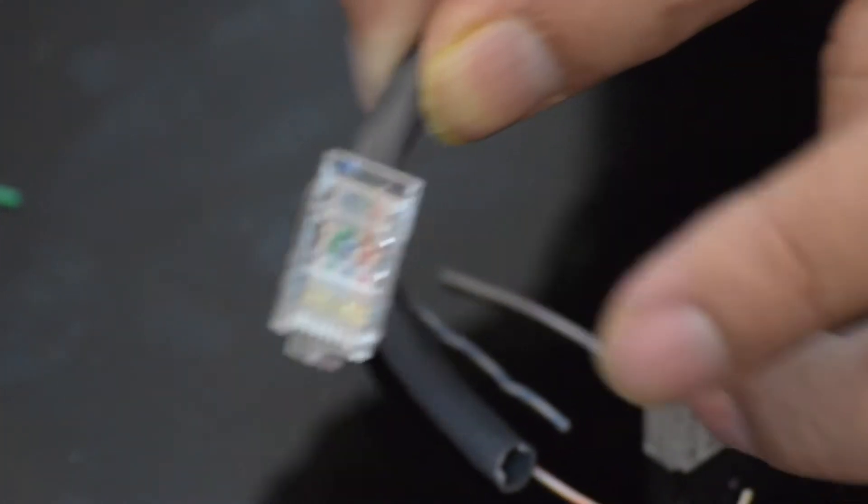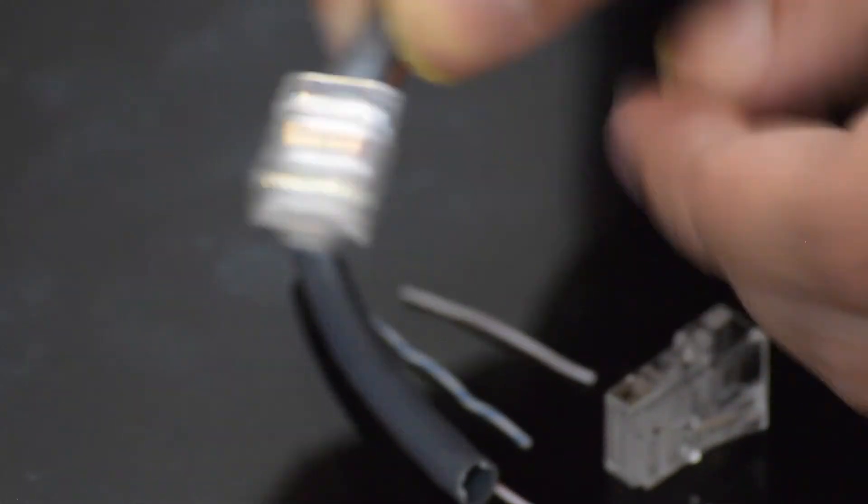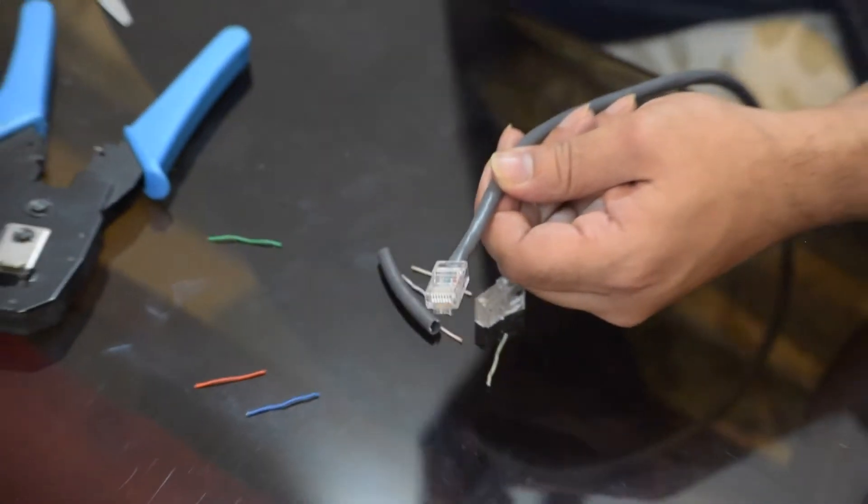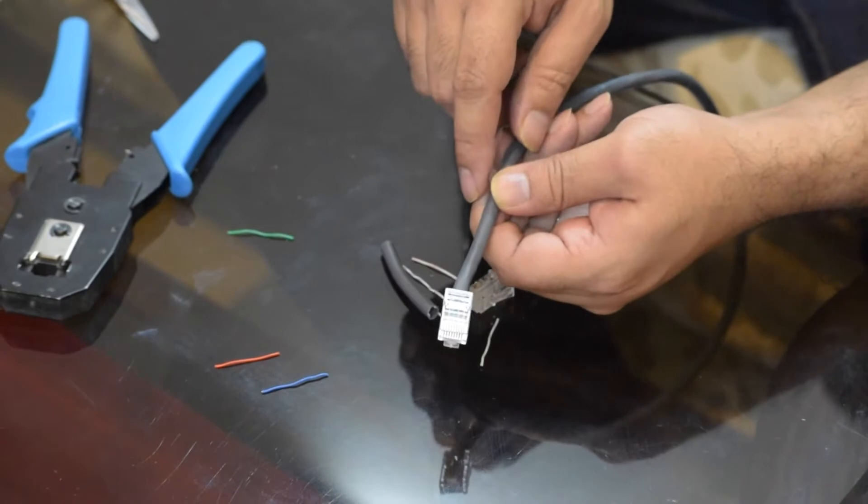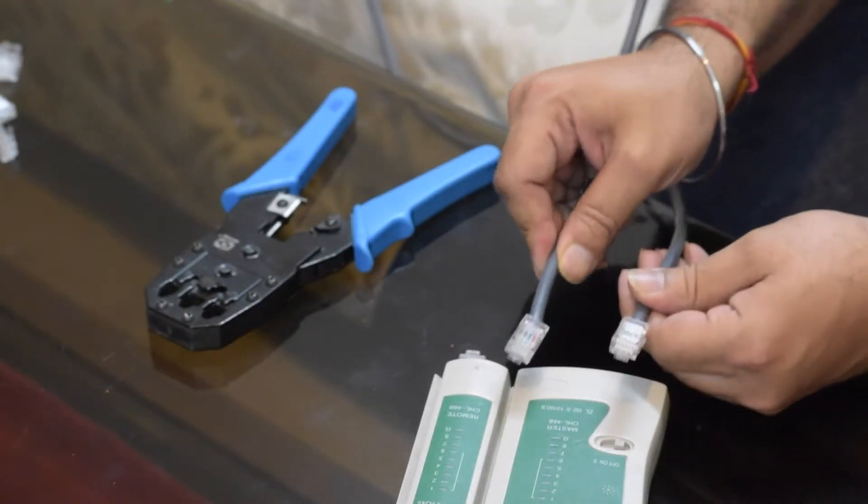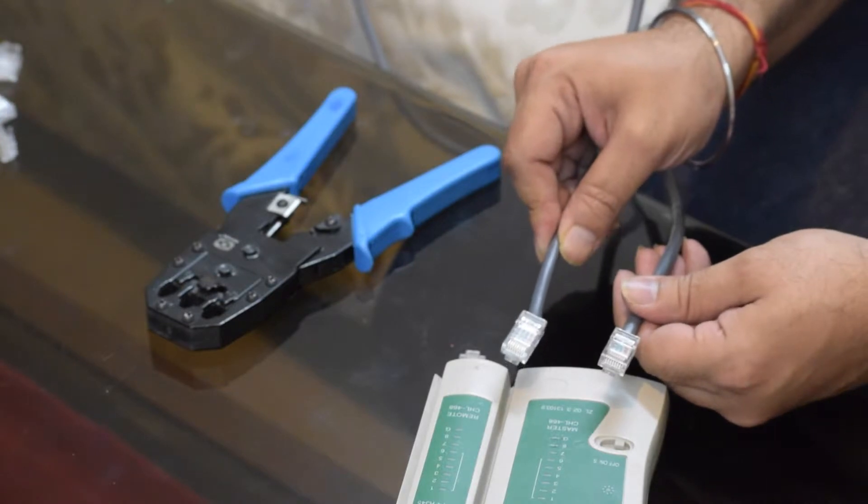Let's put a connector on the other end of the cable and then we use the cable tester to verify if the connection is good or not. So now I've got the other end of the crimp installed as well.